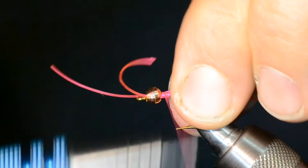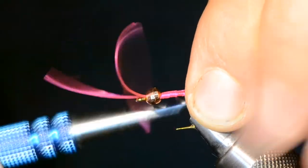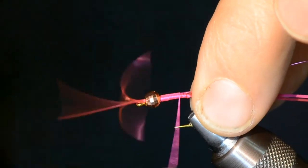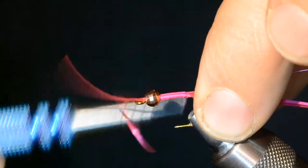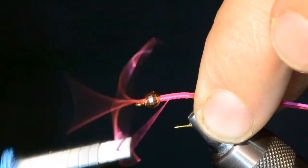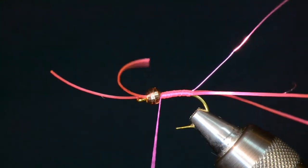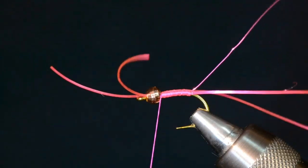I'm going to bury this all the way back to where those rubber legs are, and I just run that wire right along the top of the hook shank. And then again, once you get back there to where the rubber legs are, advance your thread back up there next to the bead.